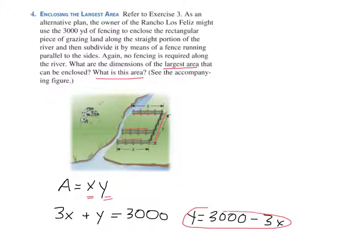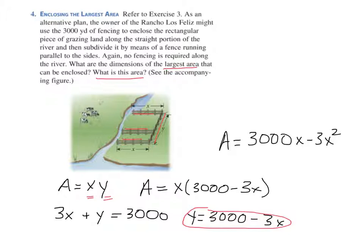And that means that our new area formula is x times 3,000 minus 3x. And if I distribute that, that area is just 3,000x minus 3x squared. So that's the function that we're going to try and optimize right there, A equals 3,000x minus 3x squared.